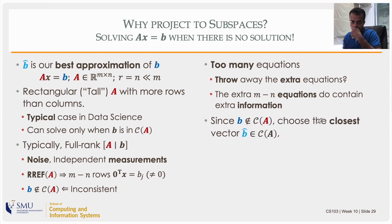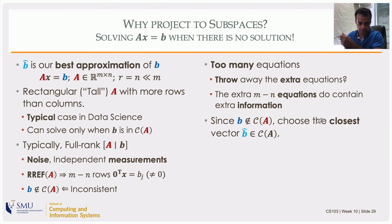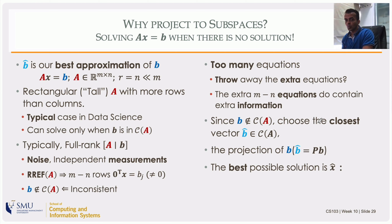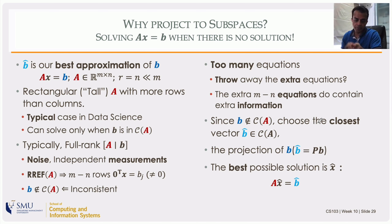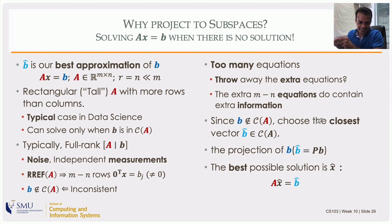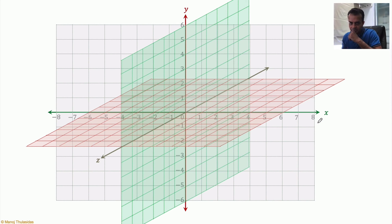Since these equations do contain information and b is not a member of the column space, if we project onto the column space and find b-hat — which is in the column space — that will be the vector closest to b within the column space, and that equation you will be able to solve. The best approximation to the solution is x-hat, where A·x-hat = b-hat, and b-hat is guaranteed to be in the column space because we're projecting onto it. The motivation will become clearer as we finish the lecture.